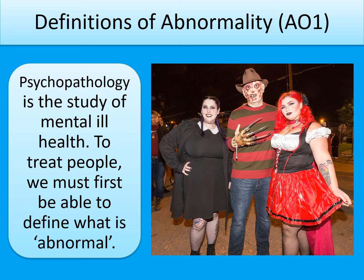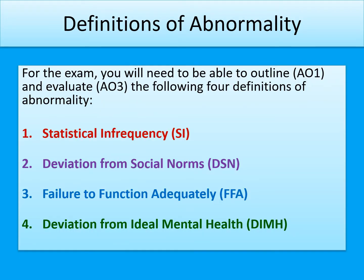This is the first revision video for the definitions of abnormality in the psychopathology unit. Psychopathology is the study of mental ill health, and to treat people we must first be able to define what is normal and what is abnormal. If you look at that photo of people dressed up for a Halloween party, that's completely normal. What wouldn't be normal is if a nurse went to work dressed as Freddy Krueger and didn't think there was anything wrong with that — that would be an indication that they are not normal. There are four definitions of abnormality that you will need to know, outline, and evaluate each one.